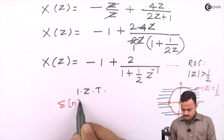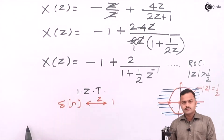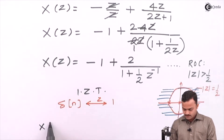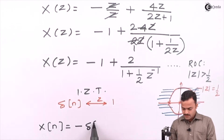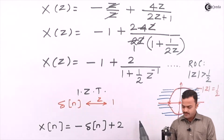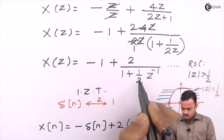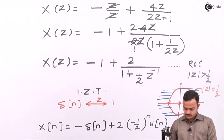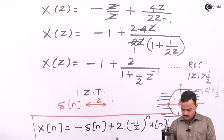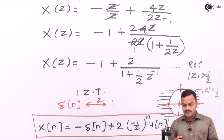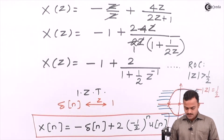The z-transform of δ(n) is 1, and vice versa, the inverse z-transform of 1 is also δ(n). So in the end, x(n) will be -δ(n), and since it's outside the circle the second term will have u(n). It is 2×(-½)ⁿu(n). This is the answer. If a constant is present, its inverse z-transform is always a delta function.